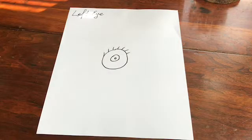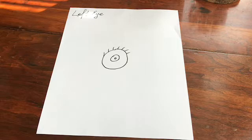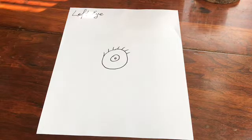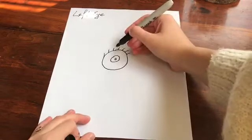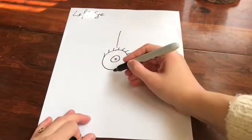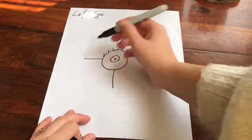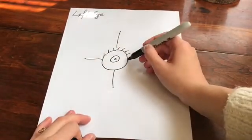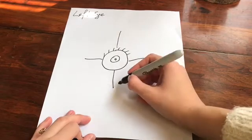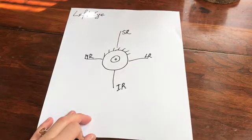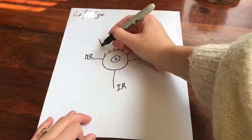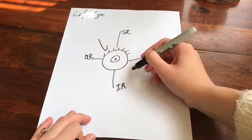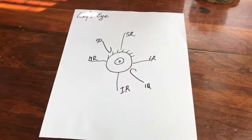Hello everybody, today we're going to talk about muscles of the eye and their innervation. The eye has four rectus muscles: superior rectus muscle, inferior rectus muscle, medial rectus muscle, and lateral rectus muscle. It also has two oblique muscles: superior oblique muscle and inferior oblique muscle.